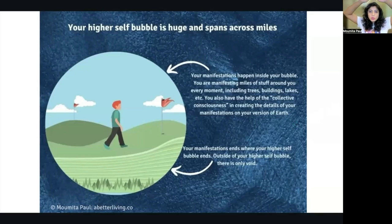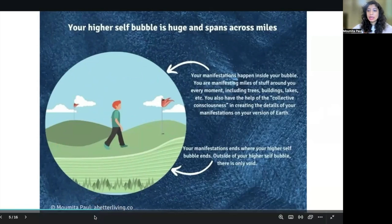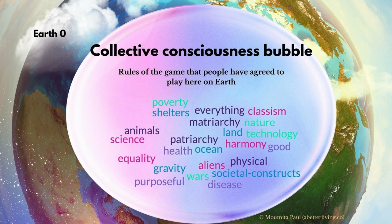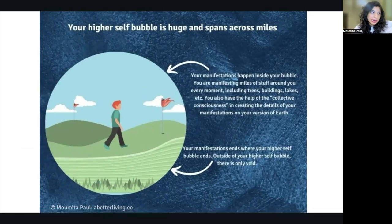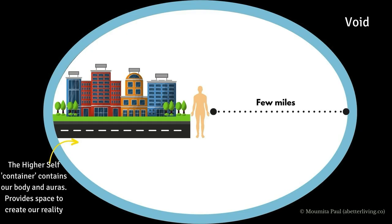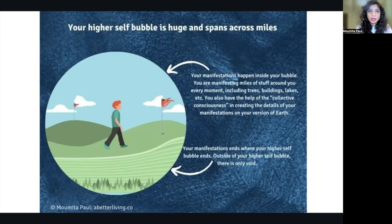As I covered in my first video, you are creating your entire reality within your higher self bubble. There is nothing outside your higher self bubble. As you can see in the diagram, your higher self bubble is not small — your higher self is huge. You are spanning across miles and you are always at the center of your higher self. And whatever physical objects you see are created with the help of the collective consciousness on Earth, the Earth's consciousness, and your higher self material. All the physical objects are created within this bubble, and this bubble's boundaries also move with you, creating the entire environment for you to have an immersive experience.